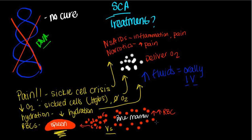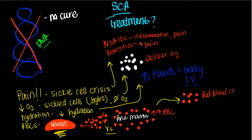To address the rapid loss of RBCs, we need to talk about replacing the red blood cells we're missing. We can deliver red blood cells via IV — a red blood cell infusion — to help replace what's been destroyed.